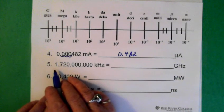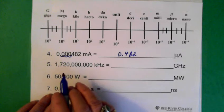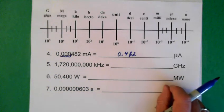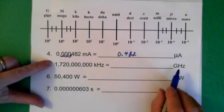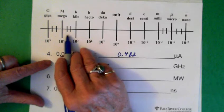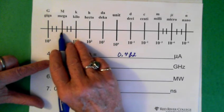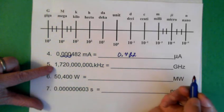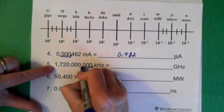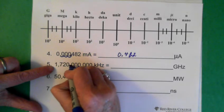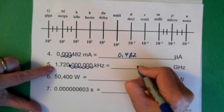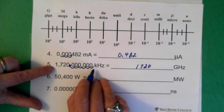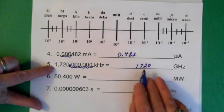We have 1,720,000,000,000 kilohertz — a big number — and we want to go to gigahertz. Starting at kilo, to get to giga we go one, two, three, four, five, six places to the left. The decimal moves six places left, and we end up with 1,720 gigahertz. That's a reasonable answer — the number is large but giga is big, so the result has to be smaller.